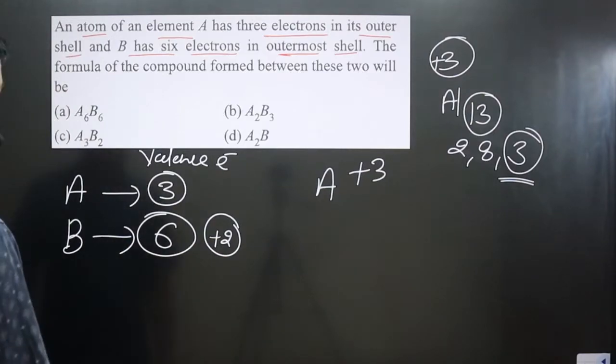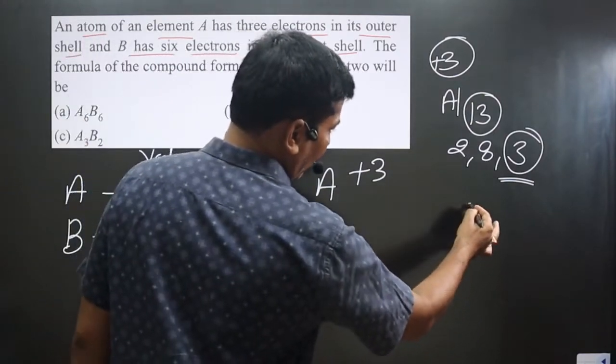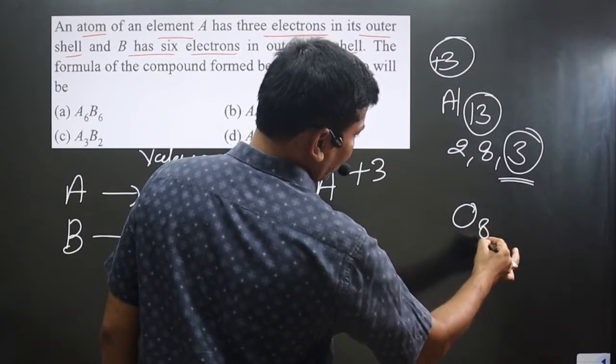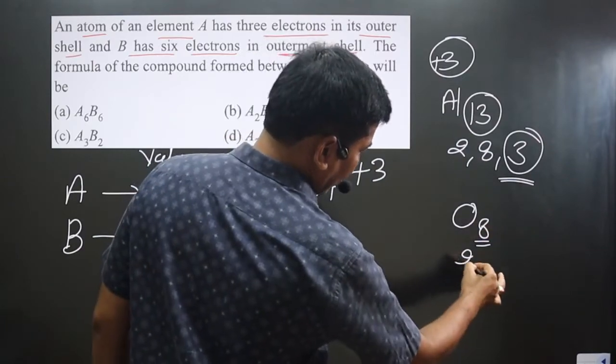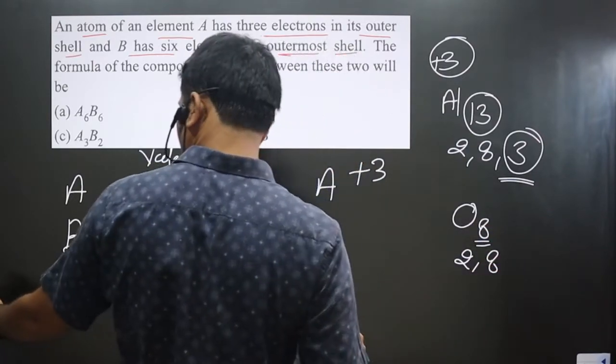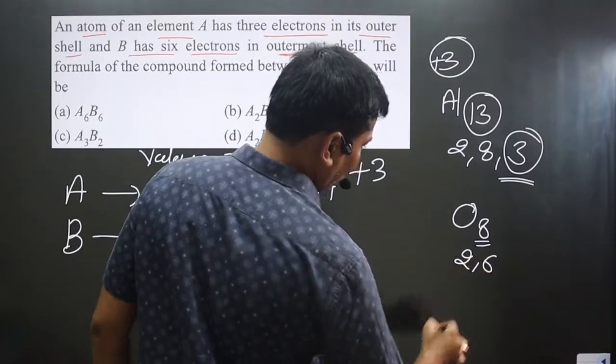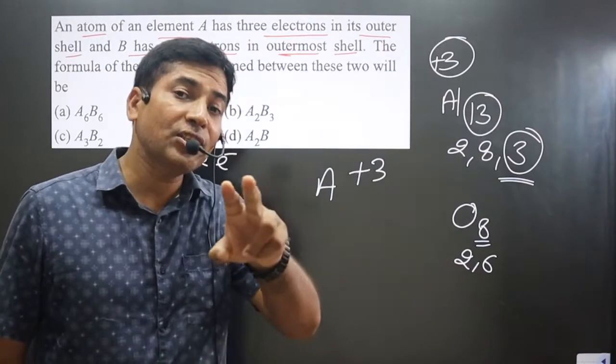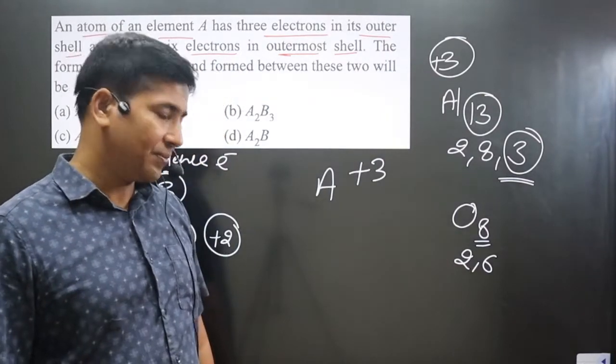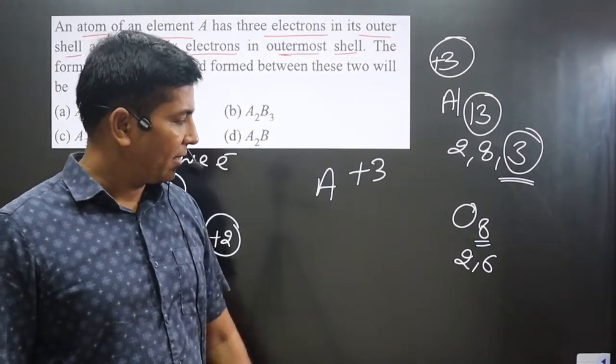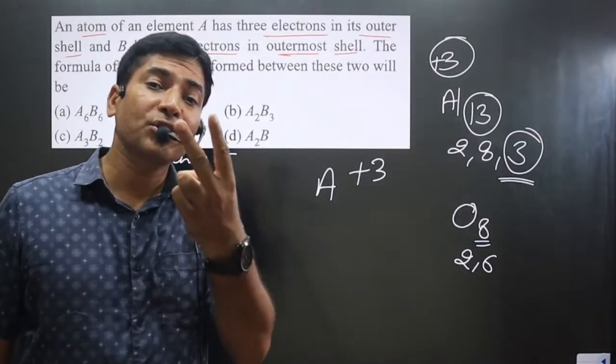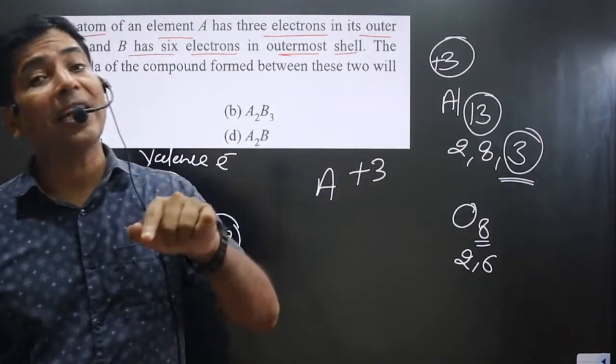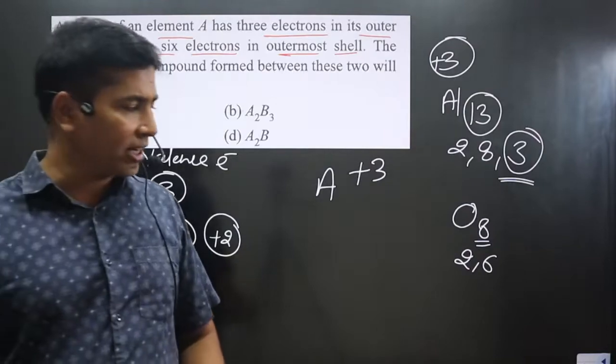Similarly, oxygen is there. In case of oxygen, oxygen atomic number is eight. We have two, six electronic configuration. In the outermost it has six electrons. It has tendency to gain how many electrons? Two more electrons, so that it can be in the stable state. It can complete the octet.